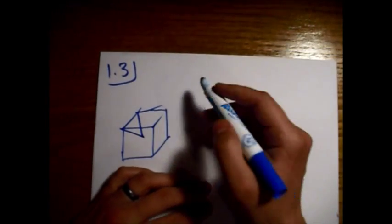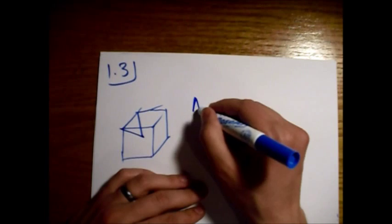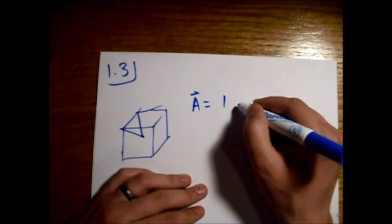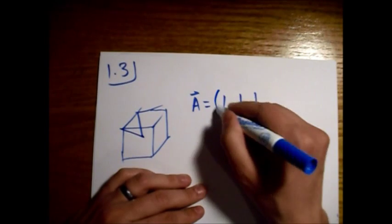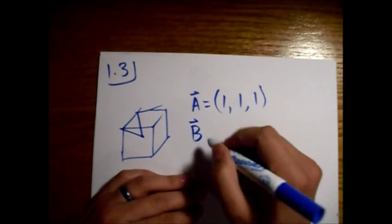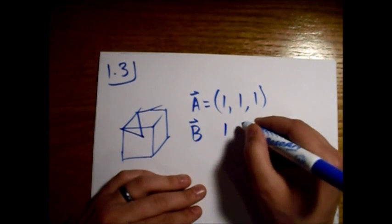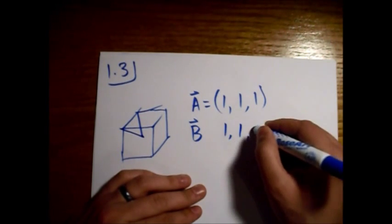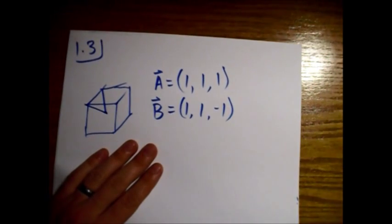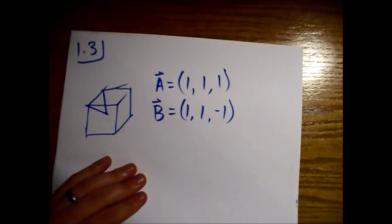All right, so we'll just use one which we'll have at the point (1,1,1), nice and easy, and we'll call the other one at the point (1,1,-1). All right, okay.